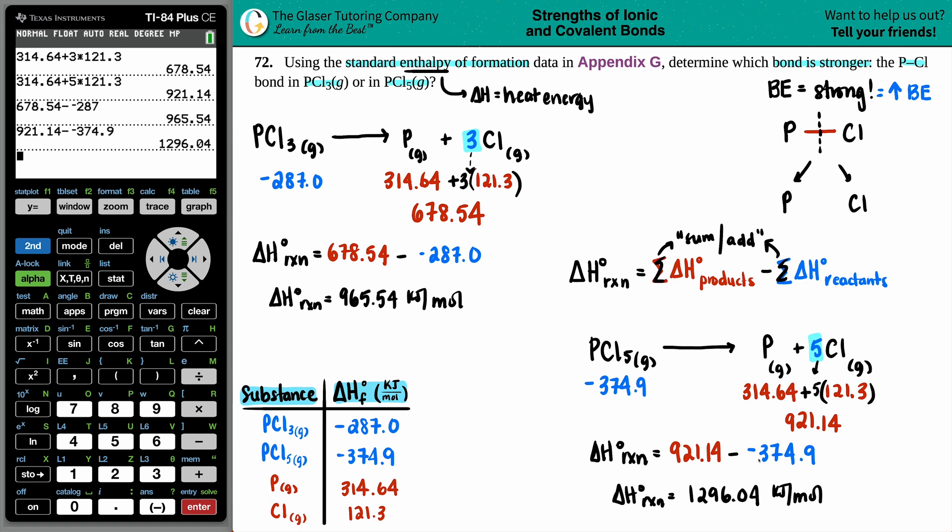So now the question is, are we finished? Well, we just want to find out which bond is stronger. They only want to know for one bond, and it's specifically just the P-Cl bond. When you're dealing with bond energies, you only want just the one bond. This 965.54 is telling you that the whole molecule has completely shattered and all of those bonds are broken.